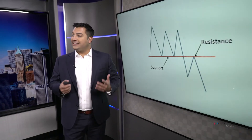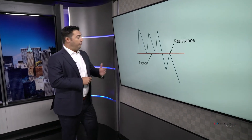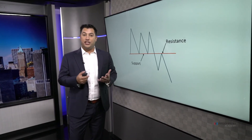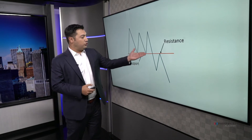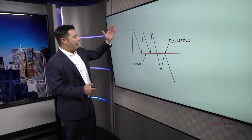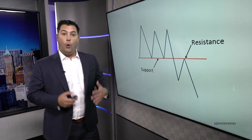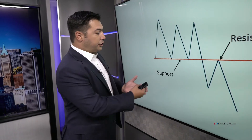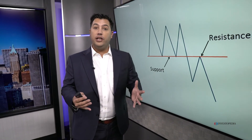It works the same way when you flip it upside down — former support also turns into resistance, and the psychology is exactly the same. Let's call this level support: every time the market gets down to this level it bounces, gets down to this level and bounces. Why? Because there are more buyers than sellers. There is support at this level where the buyers are clearly in control.